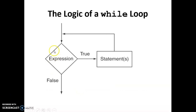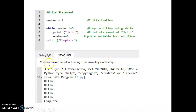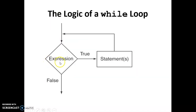For the flowchart of a while loop: there is an expression — if true, it will repeat and go back to the loop until the expression becomes false, then it moves on to the next step.